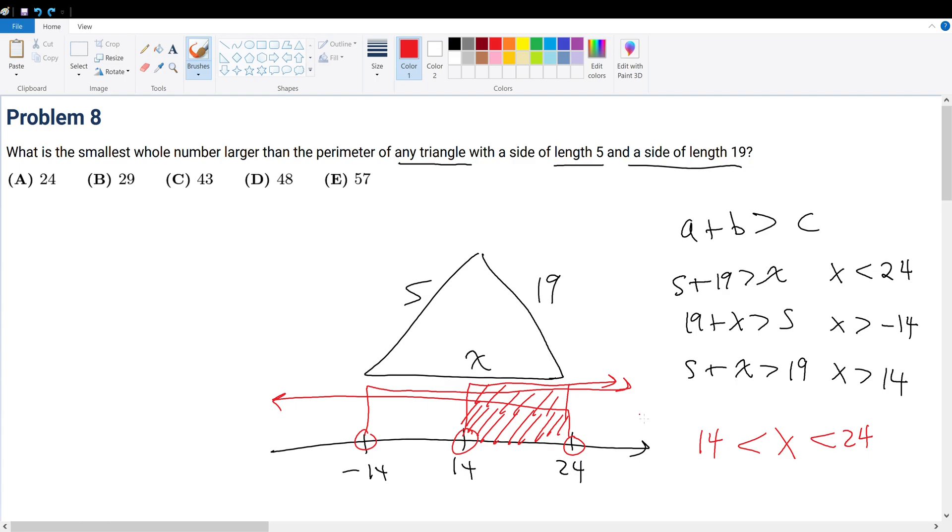So what is the smallest whole number larger than the perimeter of any triangle? Well, the largest perimeter this can be is 5 plus 19 plus 23, based on this range that we just found. So what is that? That's equal to 24 plus 23, which is 47. One more than that will always be larger, so that's 48, and we are done.